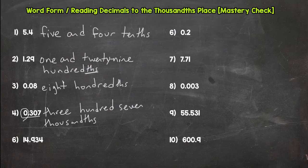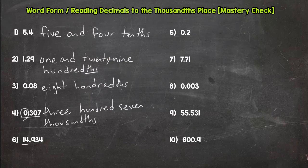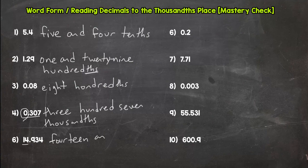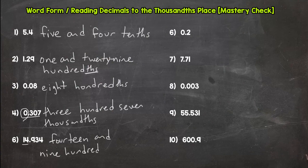If you don't have any whole numbers though, you don't need to say zero and—you can just say three hundred seven thousandths. Now number six, you would have to say and because we have a whole number part, so fourteen and nine hundred thirty-four thousandths.